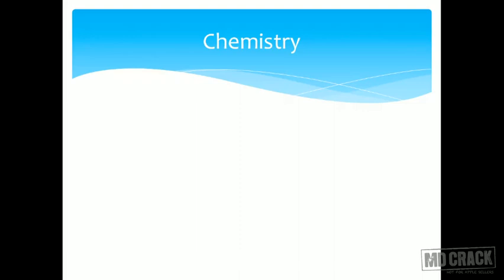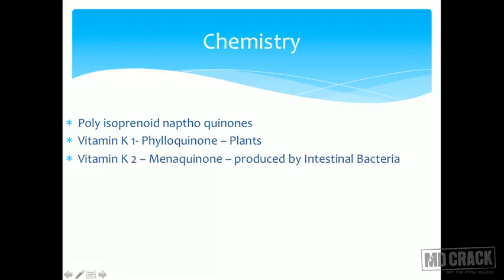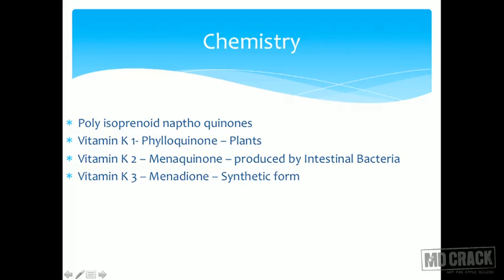Vitamin K is a fat soluble vitamin. Chemically it consists of polyisoprenoid naphthoquinones. Vitamin K1 is phylloquinone, present in plants. Vitamin K2 is menaquinone, produced by intestinal bacteria. Vitamin K3 is menadione, which is the synthetic form used in injections. Whatever Vitamin K2 is synthesized is by intestinal bacteria in the form of menaquinone.